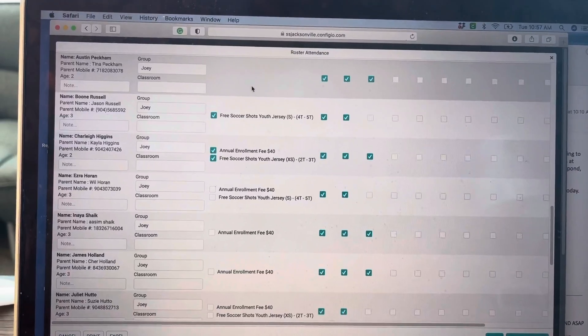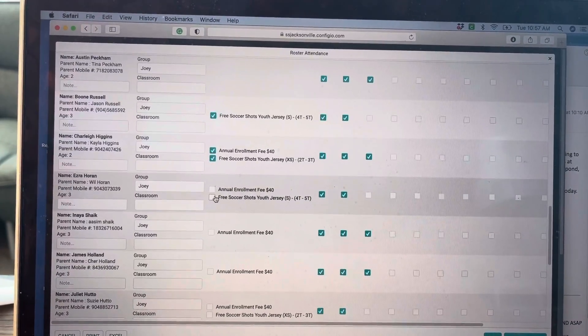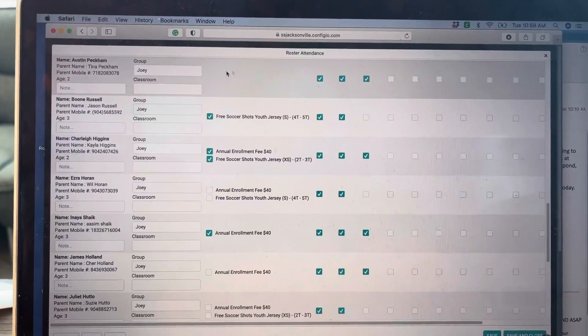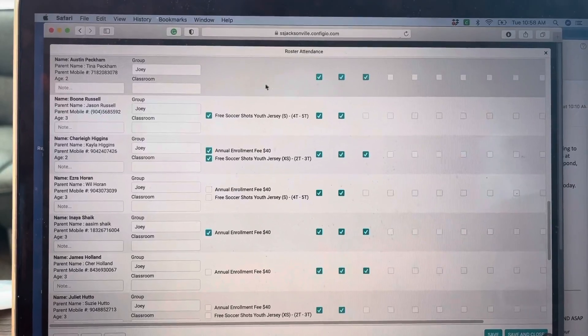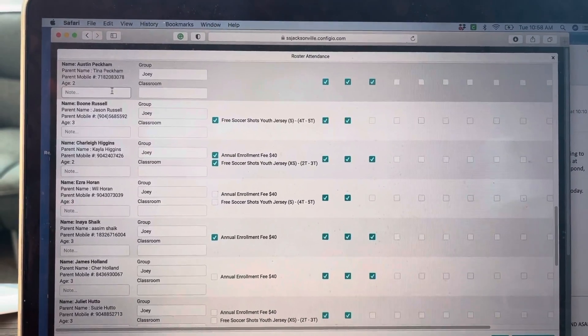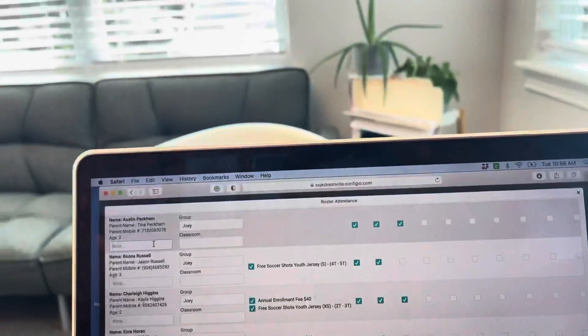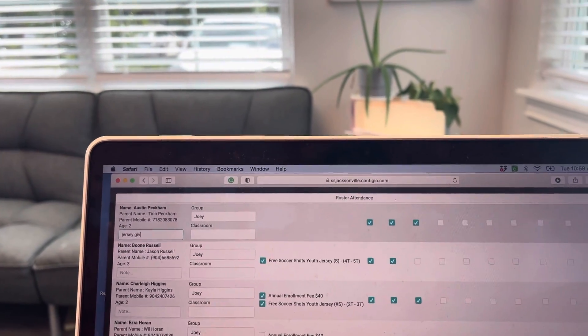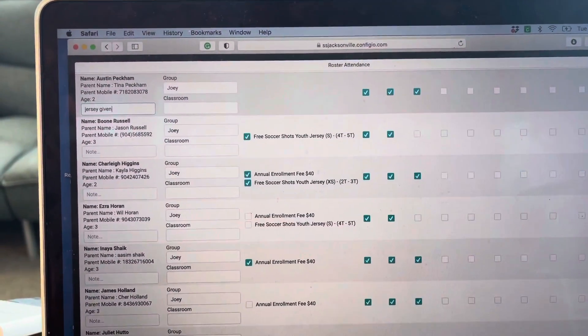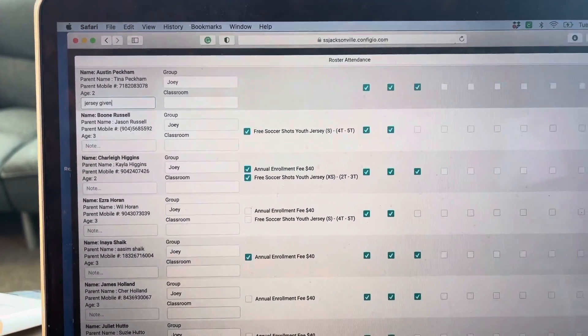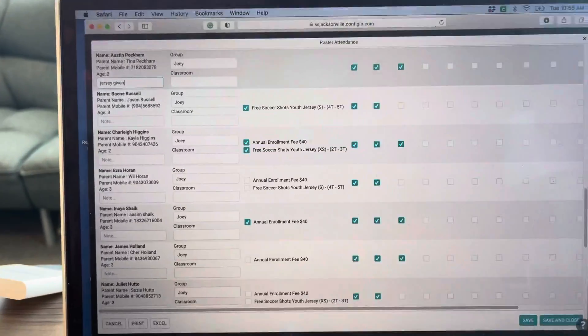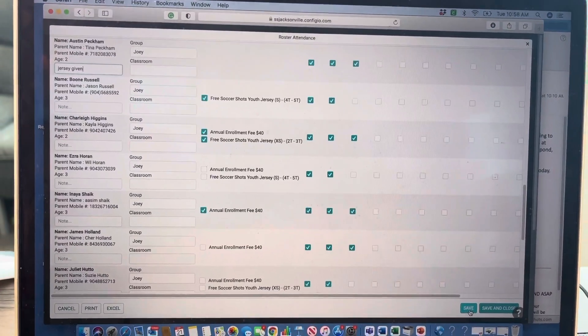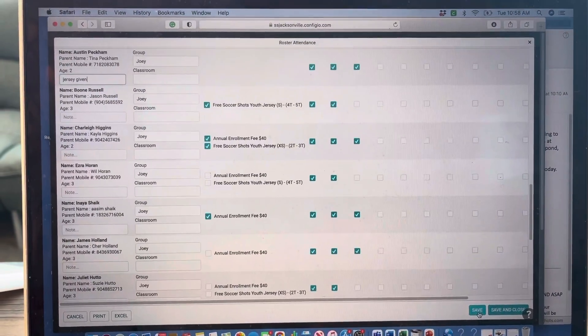Worst case scenario: there's nothing to click in. So on all these, even the annual enrollment fee with no jersey size, I'm going to click in. But here at Austin's, there is nothing to click in. Here we'll go under notes and type the words 'jersey given' under notes, right under their names. After that, of course, click save.